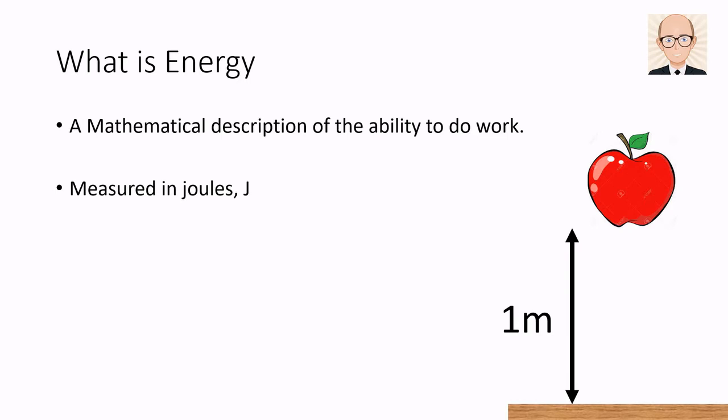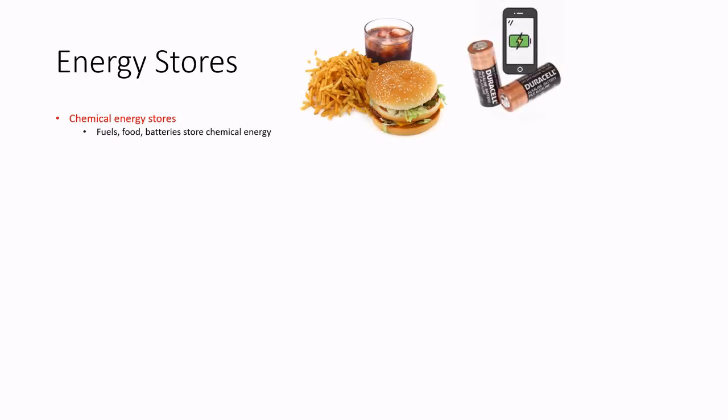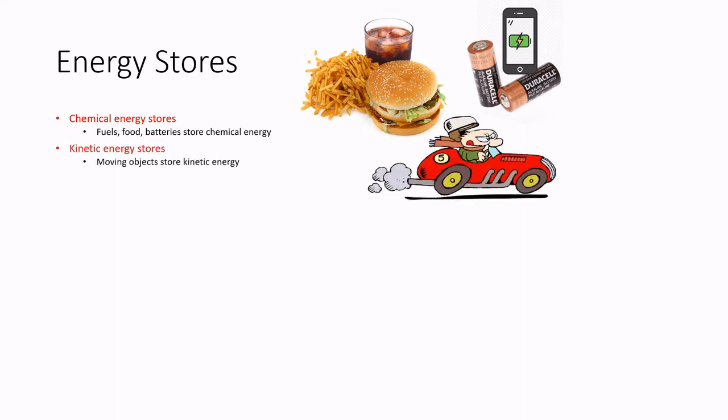Scientists talk about energy being stored in different forms. So, what are these different stores of energy? There are nine main energy stores that you need to be aware of. These are the chemical stores, such as fuels, food or electrical cells. The kinetic store, which holds the energy of moving objects.